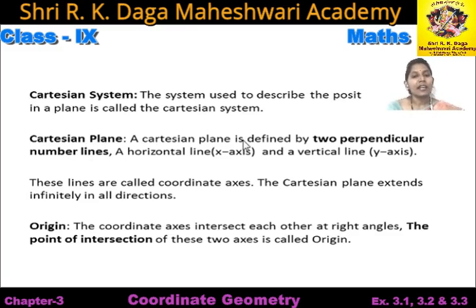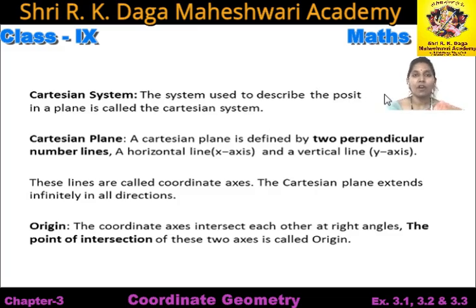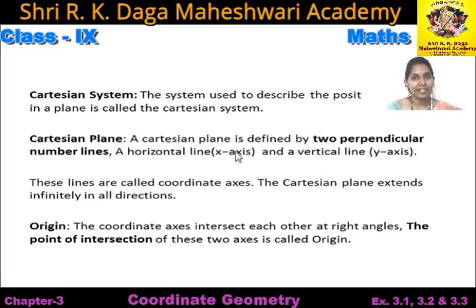Now what is Cartesian plane? Cartesian plane is defined by two perpendicular number lines, a horizontal line x-axis and a vertical line y-axis. Yaha pe do number lines jo ek dusre ke perpendicular hoti hain, matlab ek dusre ke saath 90 degree ka angle banati hain. Is me se jo horizontal line hoti hai, use hum x-axis kahte hain. Aur jo vertical line hoti hai, use hum y-axis kahte hain.